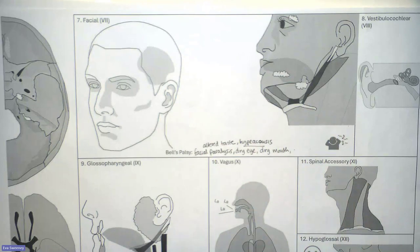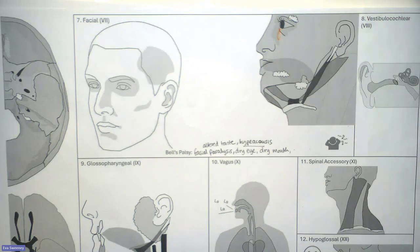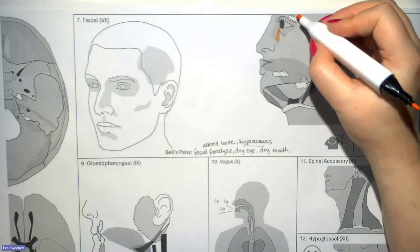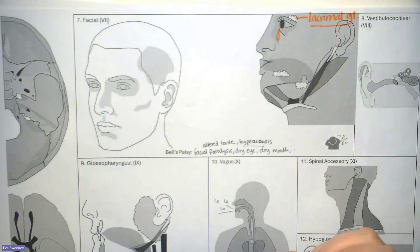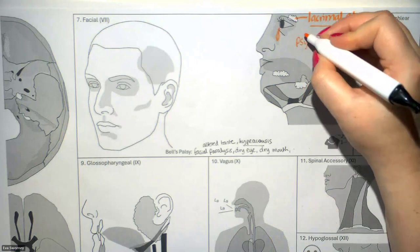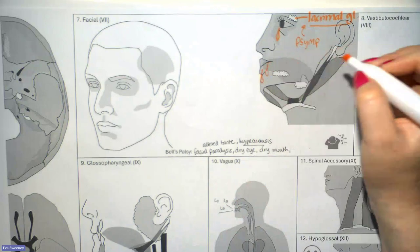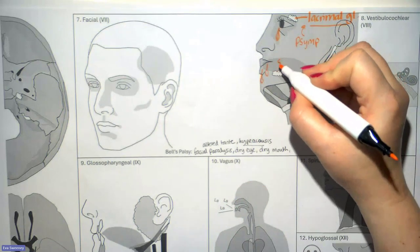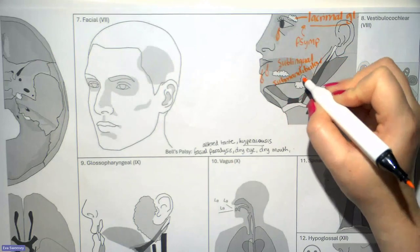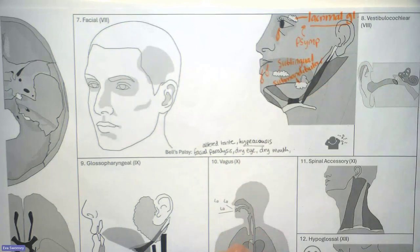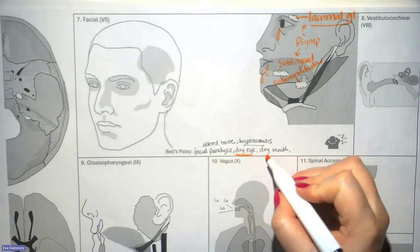Looking at the diagram, one function of the facial nerve is that it supplies the lacrimal gland with parasympathetic innervation, telling that gland to secrete tears. It also supplies the sublingual and submandibular salivary glands, helping to produce saliva — also parasympathetically driven. This explains both the dry eye and the dry mouth in Bell's palsy.